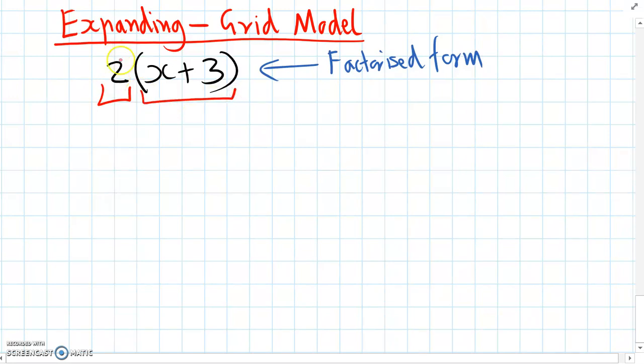So when we have two brackets x plus three, remember this means two is one of the factors, and we're multiplying by x plus three. We don't write the multiply symbol, but it still means multiply by two.